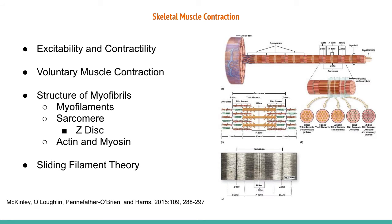Skeletal muscle contraction can be described by excitability and contractility. Excitability is the ability for muscle cells to respond to an outside stimulus, creating a sequence of electrical charges across the sarcomere leading to muscle contraction. Contractility refers to the ability of the skeletal muscle to contract, causing cells to shorten and leading to body movement.